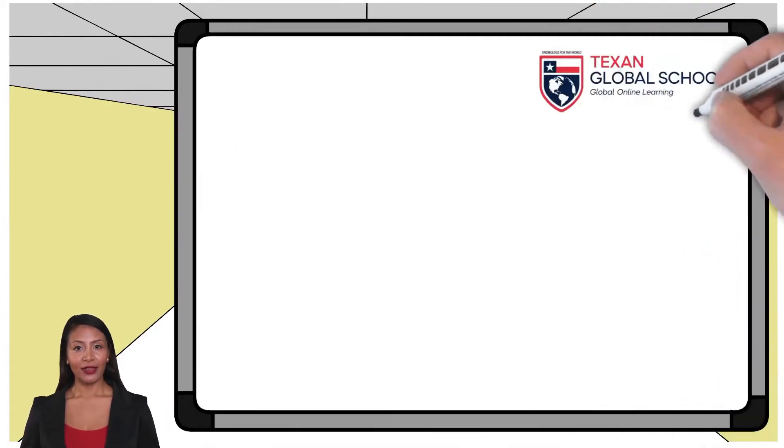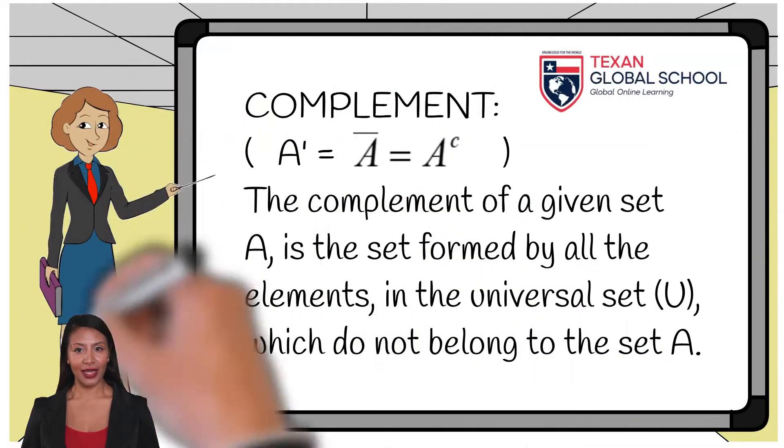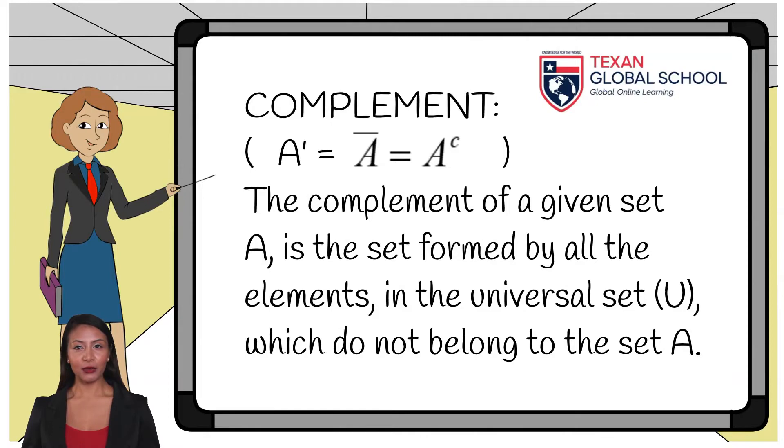The complement of a given Set A is the set formed by all the elements in the universal set U which do not belong to the Set A. To carry out this operation, we place all the elements that are outside the set, or all those elements needed to complete the universal set.